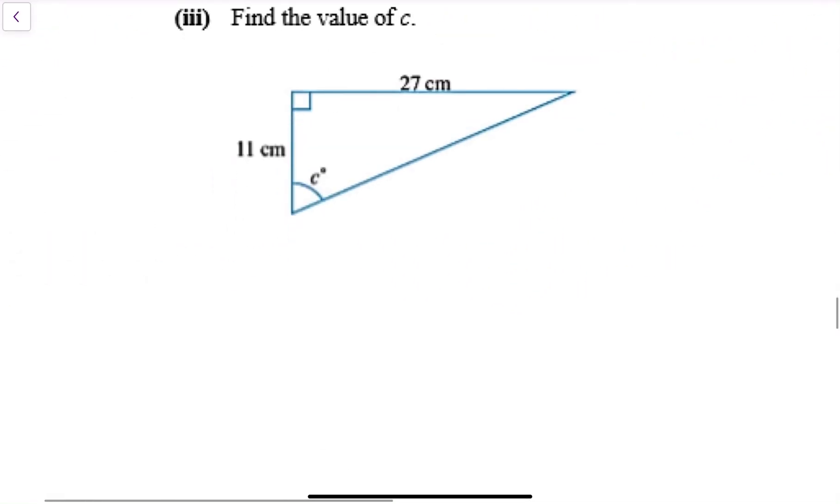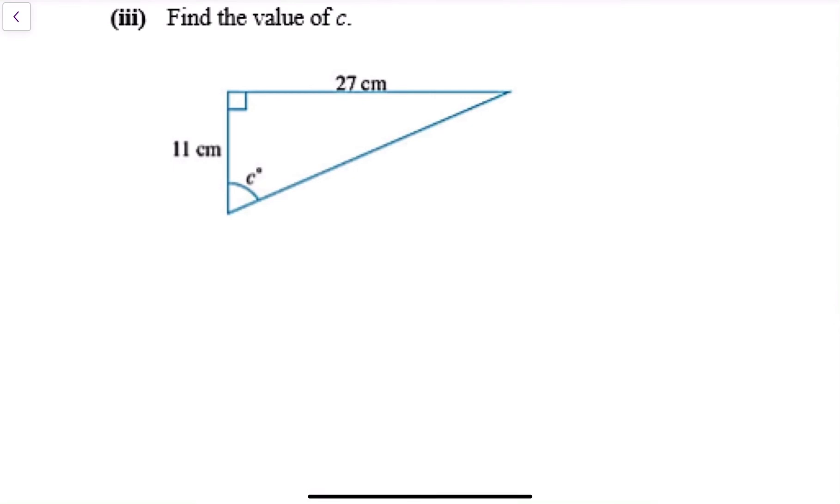Last one, reference angle c. This is my H, this is my O, this is my A. I have O, I have A, so I use tangent. Tangent c equals 27 over 11. C equals tangent inverse of 27 over 11.